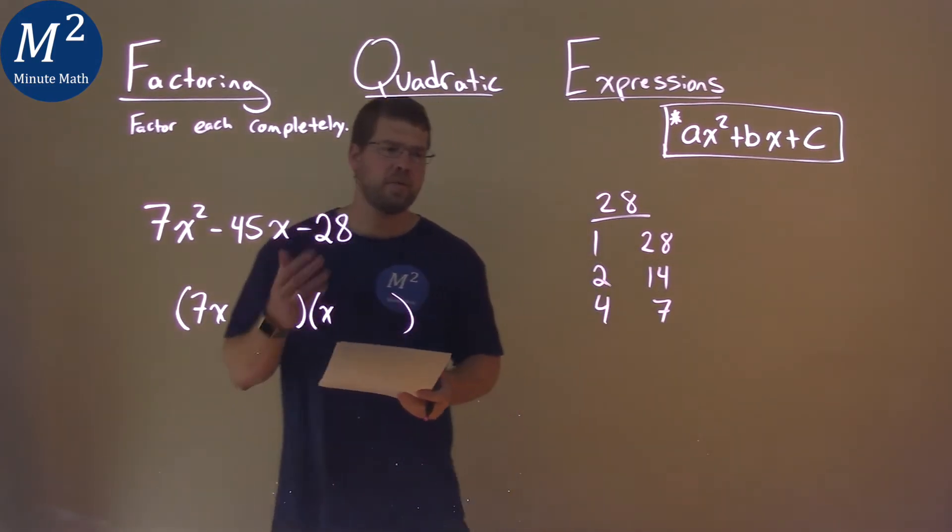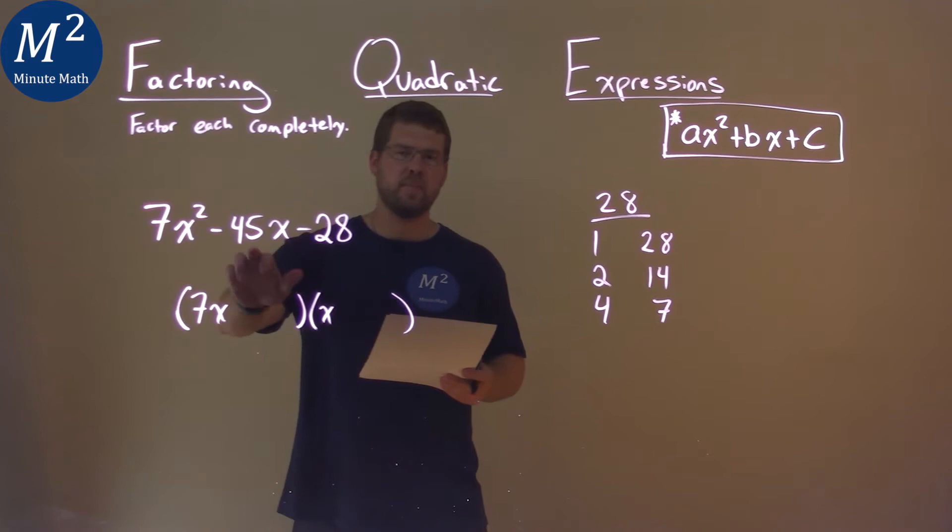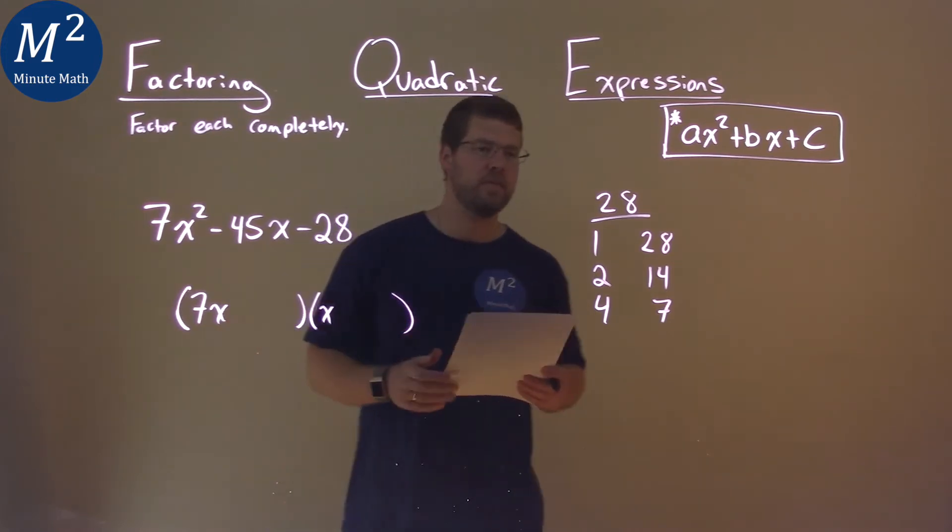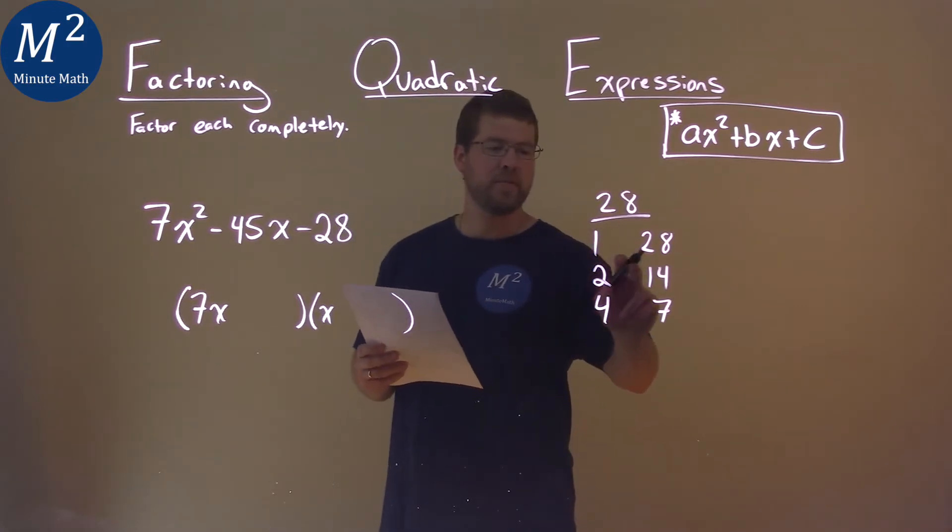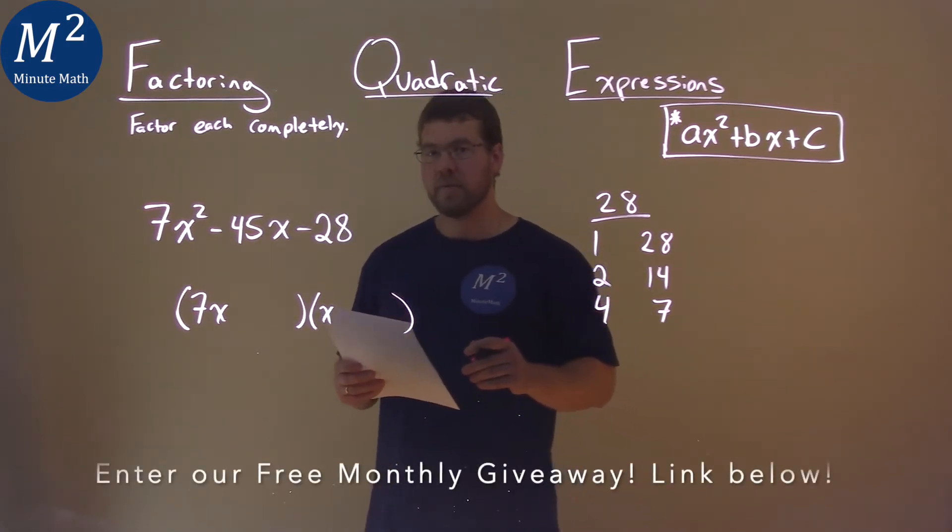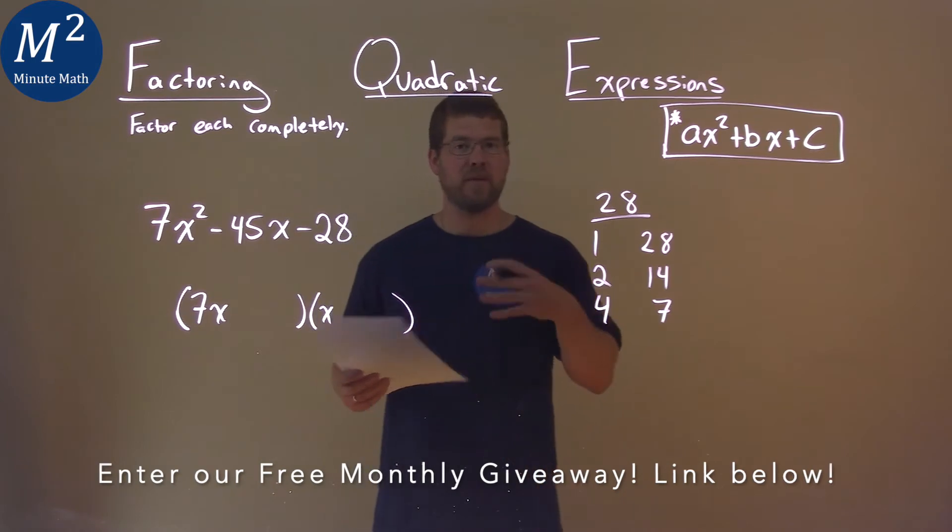So now with this information I'd also look at the b value. The b value is negative and the c value is negative. So that really tells me here that one of these numbers will have to be negative, and then when we add it together we'll have a negative number.